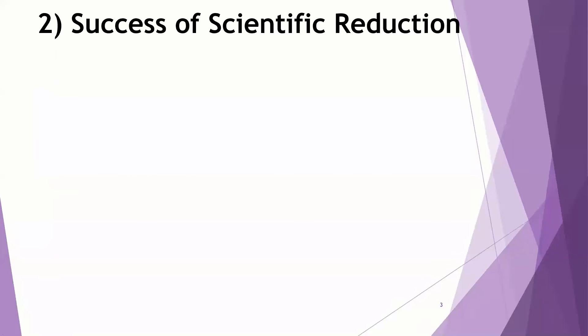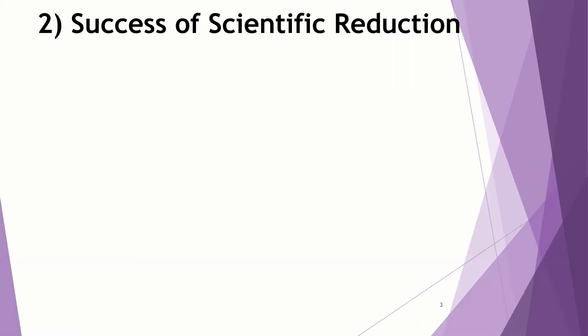What else can be said for the identity theory? Another argument, this second argument, would be the success of scientific reduction in other areas. When we're reducing something, we're saying this something that might seem mysterious and odd is reduced to this other thing that is much more clear and understandable. We're saying the mind is reduced to the brain with the identity theory.